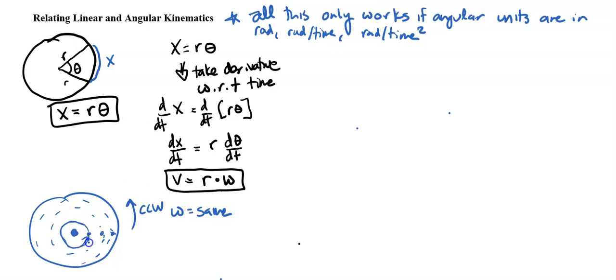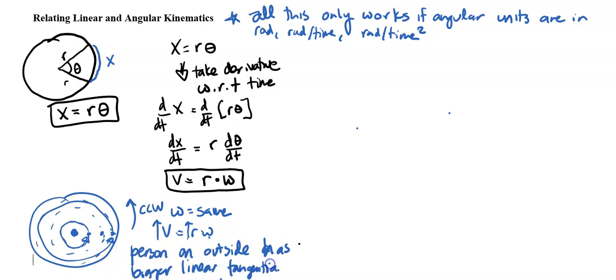But let's see. The person on the inside, they have way less distance to cover than the person on the outside. They have way more distance to cover in the same amount of time. So that person on the outside is going to go way faster. And let's look at that. So if v equals r omega, so r for the outside is going to be bigger. Omega is the same. So if r is bigger, then v is bigger. So person on outside has bigger linear or tangential velocity.